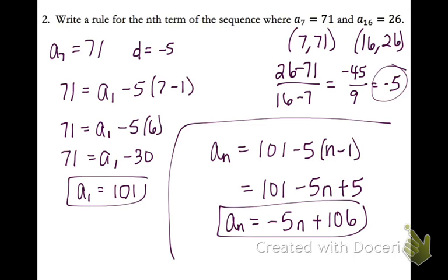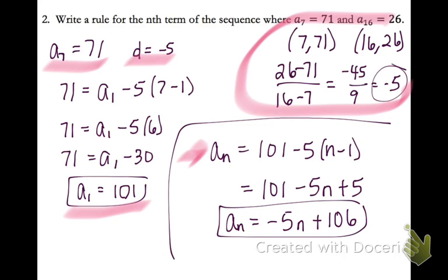On this last one, I was given two terms. So the first thing I did was I found my common difference, which is kind of like slope. And then I picked my favorite term and my slope and I found my first term. And then I came down here and wrote my final equation by simplifying the formula.